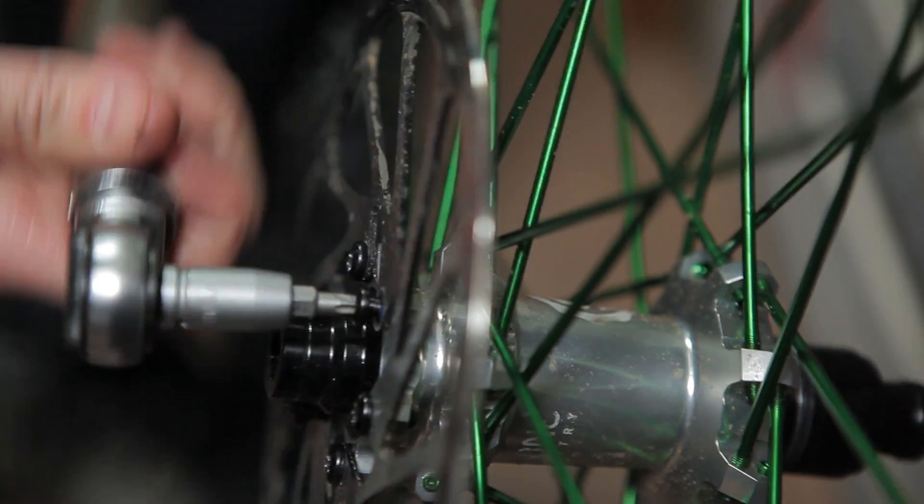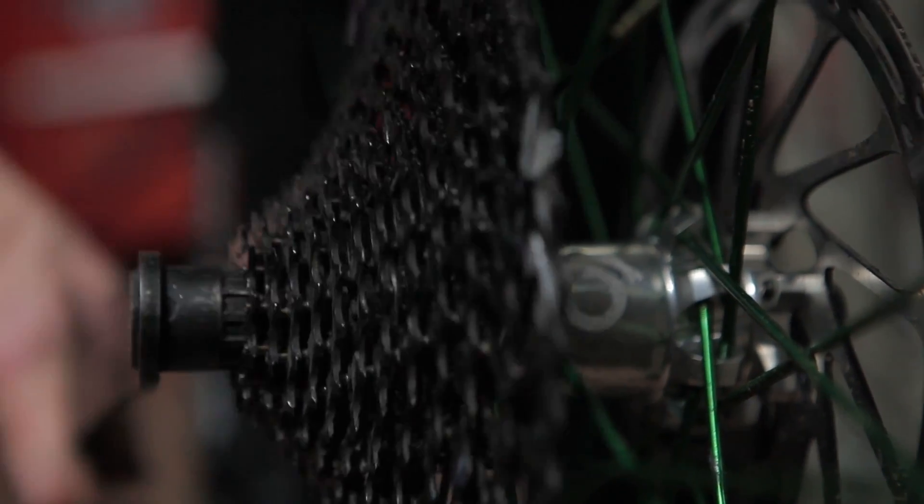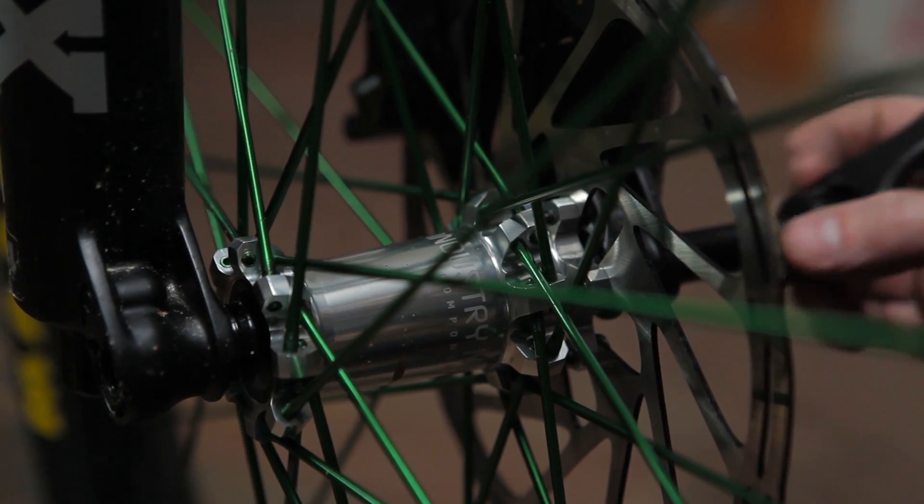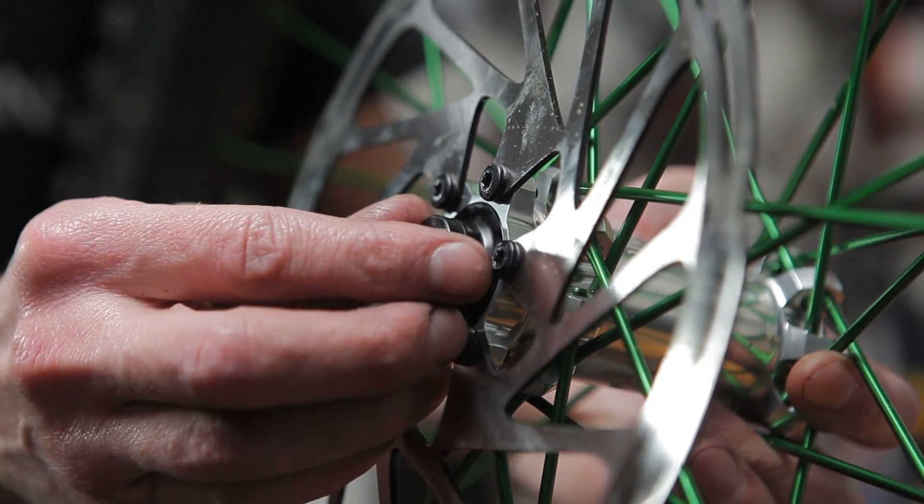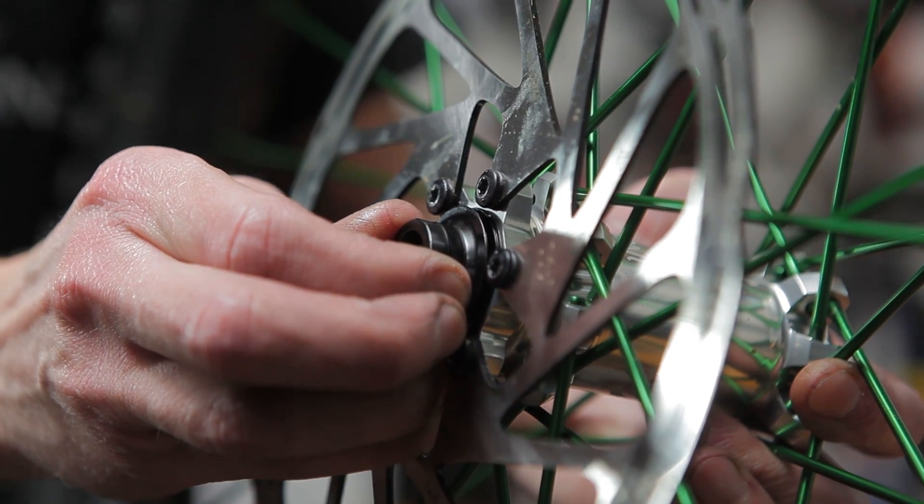With fresh bearings and your freehub re-lubricated, you're ready to reinstall your cassette and rotor. Now you're ready to move on to the front wheel. With the wheel out of the fork, pull the end caps.